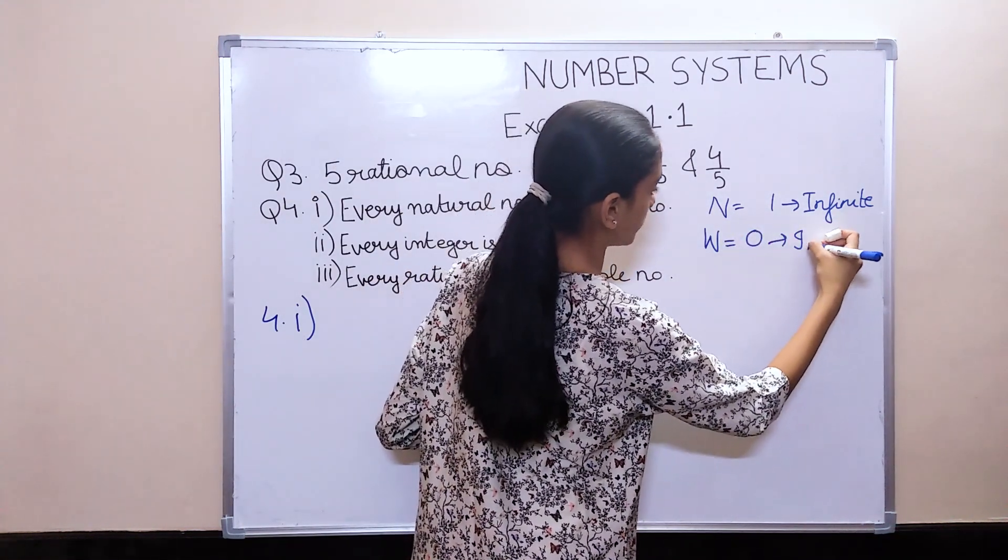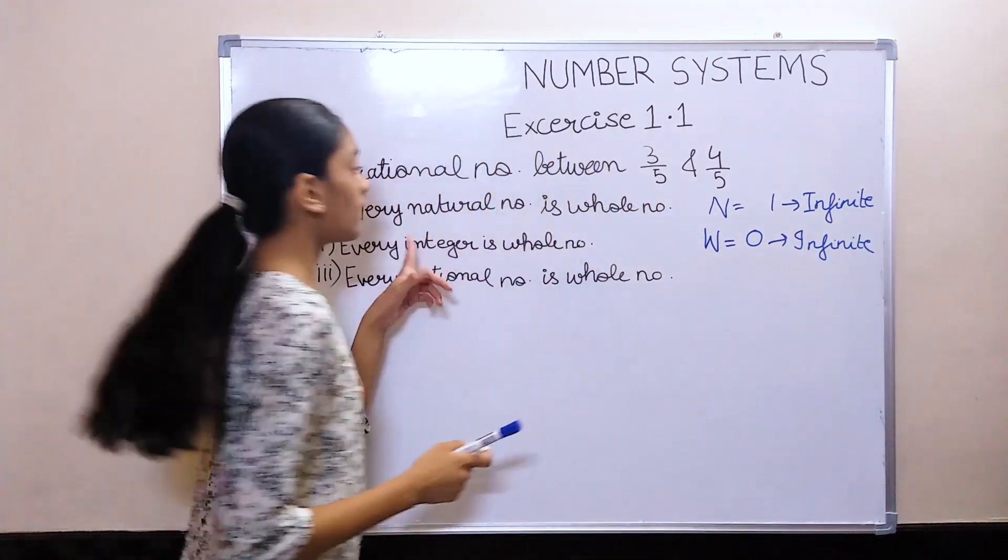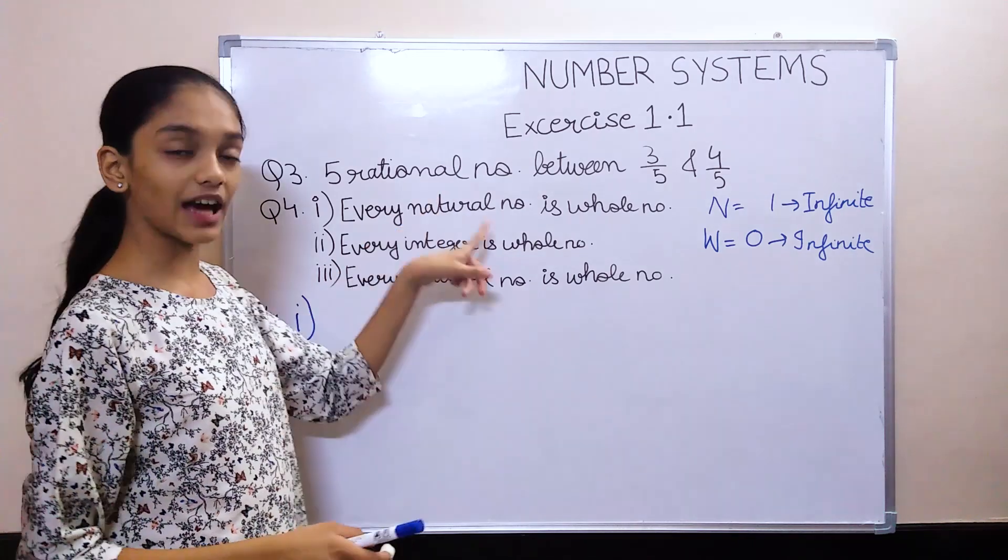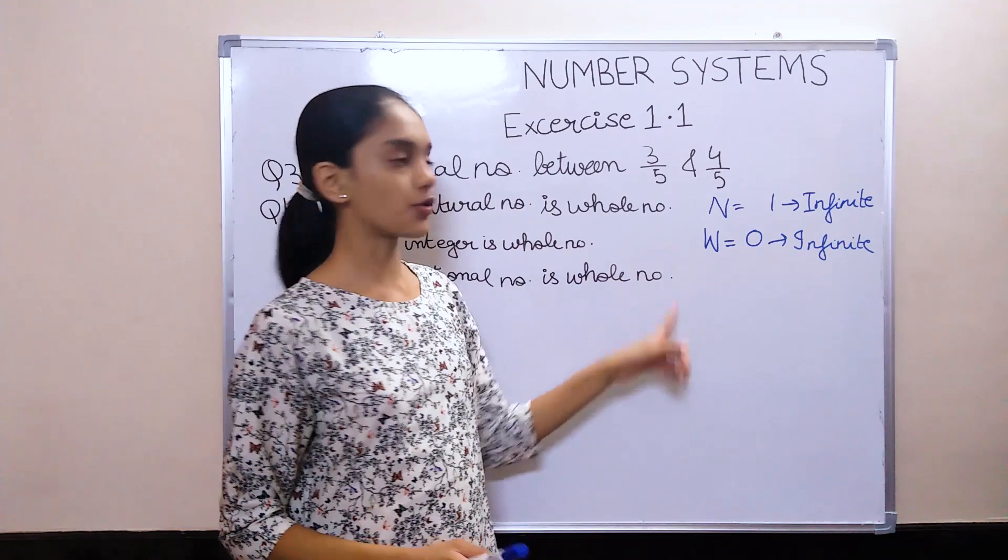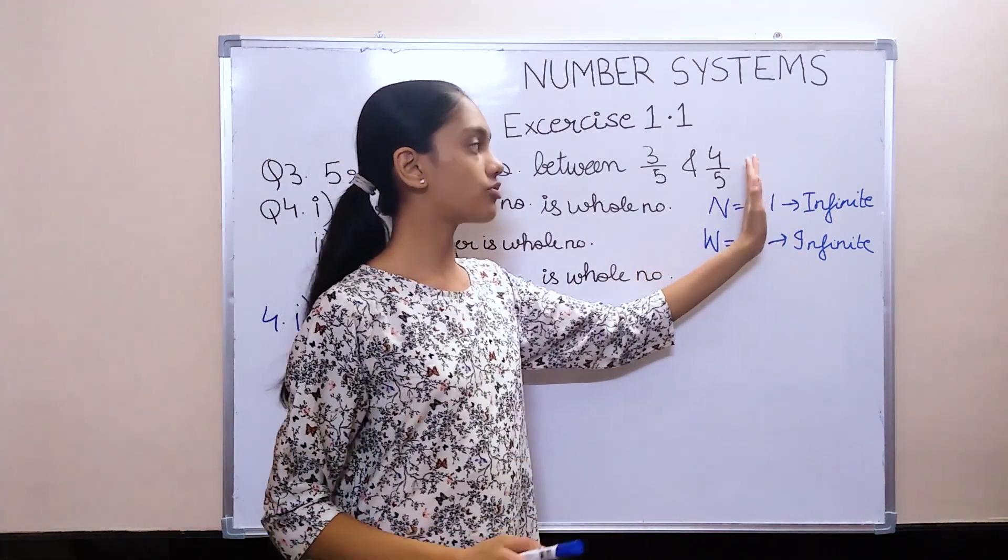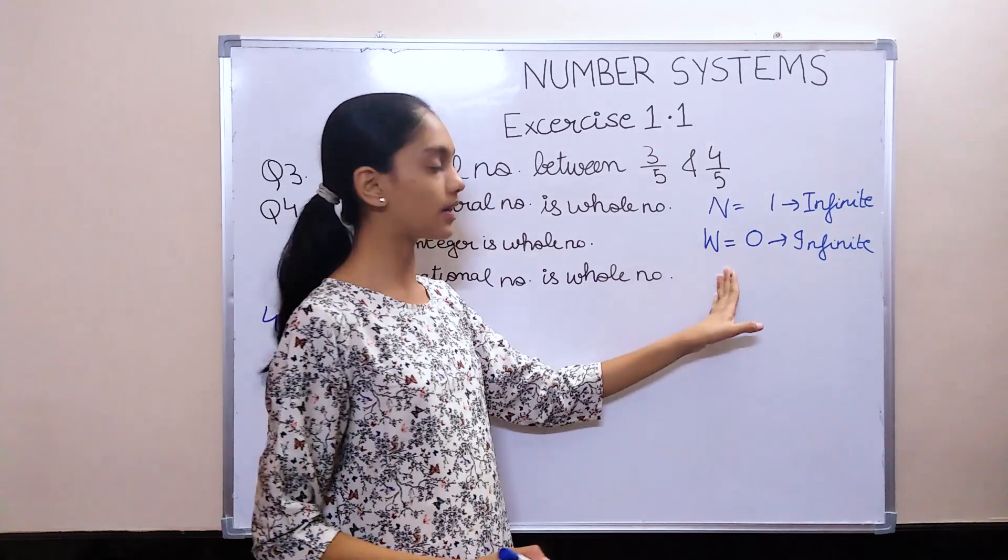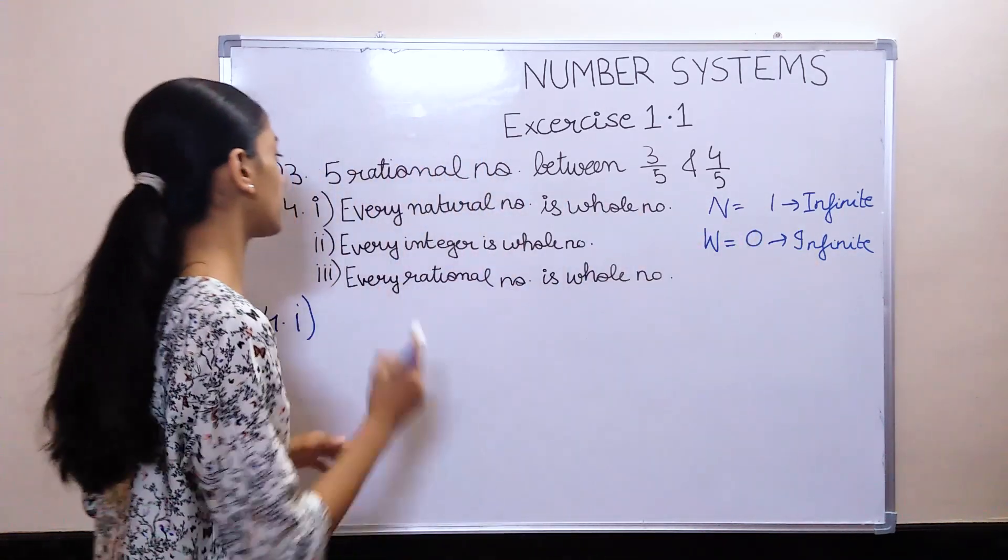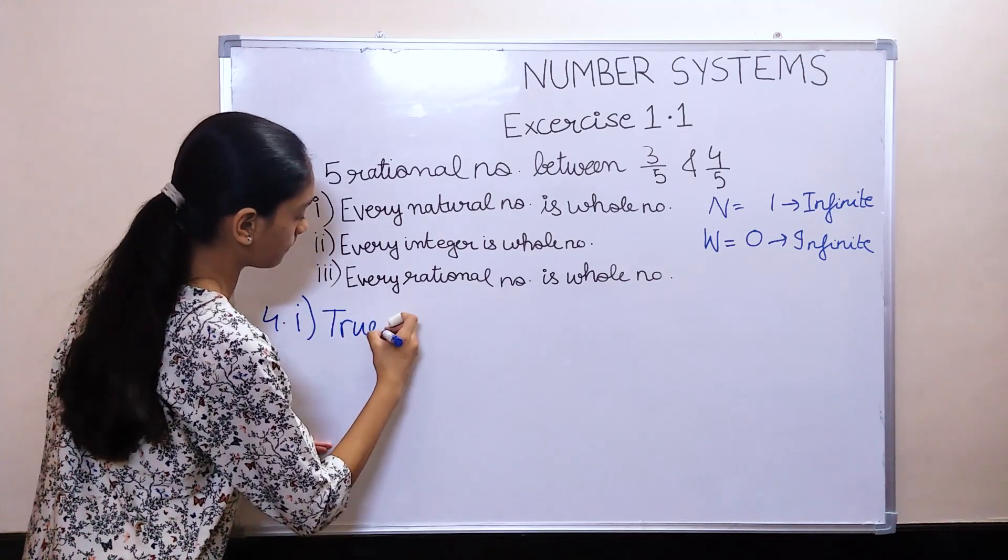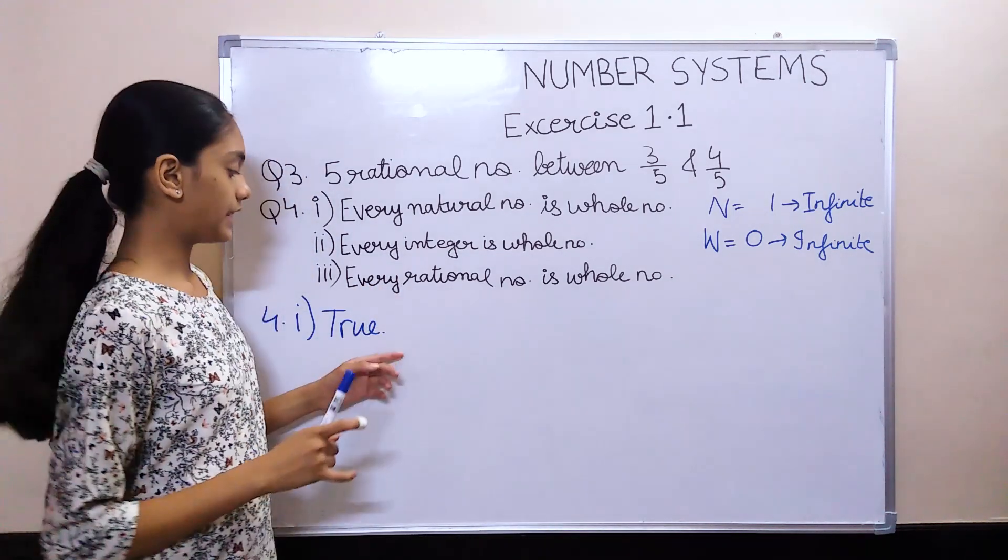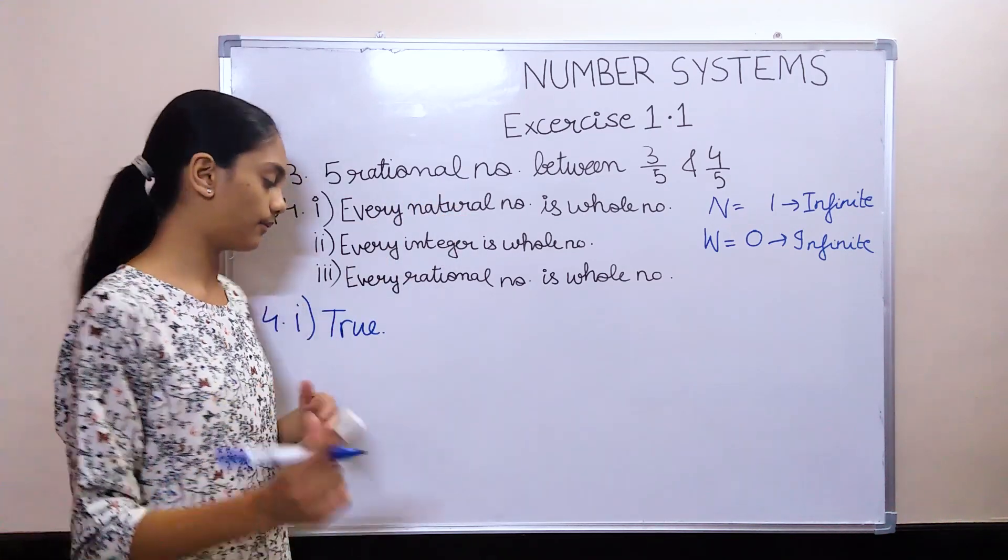Now the question is, every natural number is a whole number. Yes, that is true because natural numbers are from 1 to infinite and whole numbers also contain numbers from 1 to infinite. So the statement would be true. The reason: all natural numbers are also considered as whole numbers.